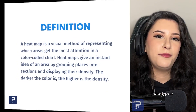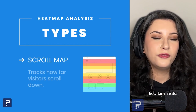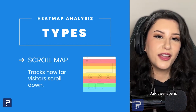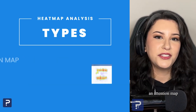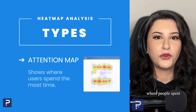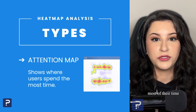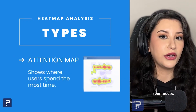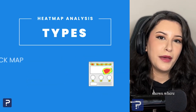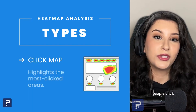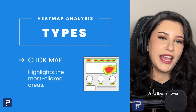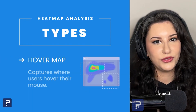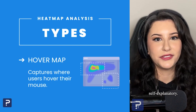One type is a scroll map, which shows you how far visitors scroll on a page. Another type is an attention map that shows you where people spent most of their time on your page. Now these next two involve your mouse — a click map shows where people click the most, and a hover map shows where people hover their mouse the most. Pretty self-explanatory.